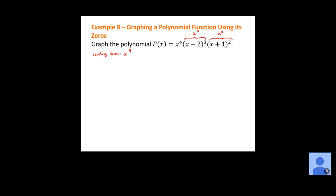4 plus 3 plus 2 tells us that our leading term is x to the ninth power. All of those coefficients are ones, so 1 times 1 times 1 is still 1, giving us x to the ninth. So the degree of this polynomial is 9, and since we look at that highest exponent, we know it's odd.